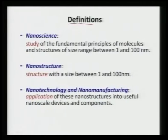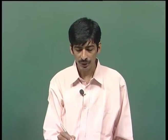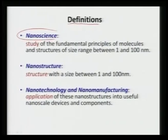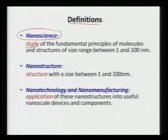There are a couple of definitions which we need to understand before we progress into manufacturing. First thing is nano science. Nano science is the study of the fundamental principles of molecules and structures which lie between a size range of 1 to 100 nanometer.